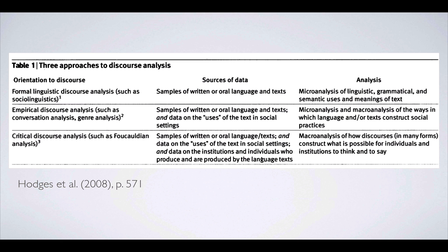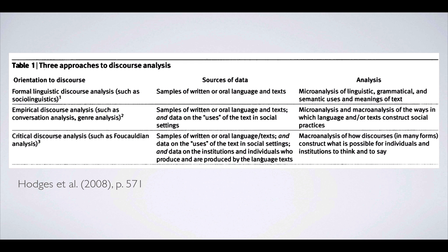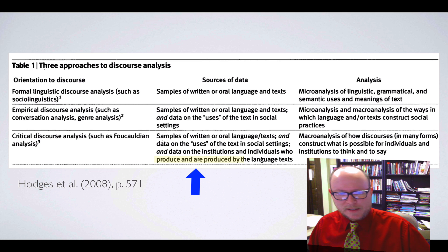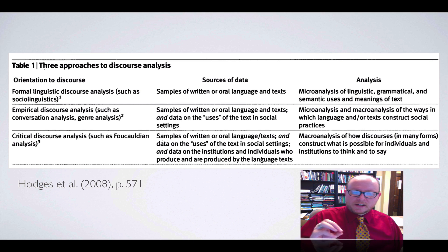And just as Gee points out, then the third one lines up very well with the larger social practices definition of discourse, which would be critical discourse analysis. And their example is Foucauldian discourse analysis. So you'd be taking samples of written or oral language and text and data on the uses of those texts in social situations and data on the institutions and individuals who produce and are produced by the language text. Now produced and produced by, that would be like if we were talking about mental illness, the people who are producing these texts would be doctors, nurses, psychologists, perhaps religious leaders, those kinds of things, and the people who are produced by those texts, the actual mentally ill people. And those sources of data, you would kind of do a macroanalysis of how discourses in many, many forms are actually constructing what's possible for individuals to think and to say.